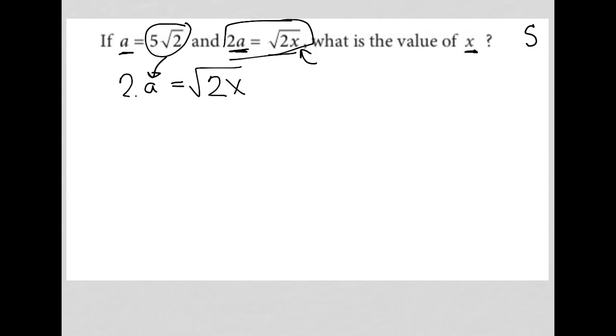This question becomes a substitution type of question. So instead of 2a, I have 2(5√2), because 5√2 is a, given to us in the question, equals √(2x).